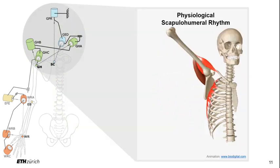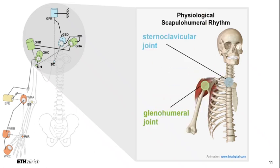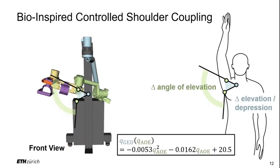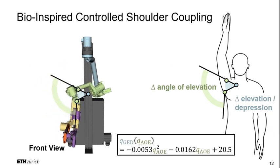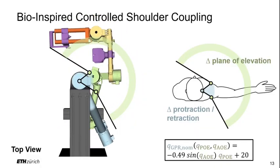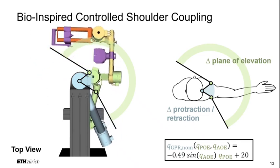The sternoclavicular joint contributes around one-third of the overall range of motion of the shoulder. The robot should support patients in recovering this healthy scapulohumeral rhythm. Therefore, we coupled the elevation and depression movement with the angle of elevation of the upper arm to follow the pattern of unimpaired humans. Similarly, protraction-retraction was coupled to the plane of elevation movement of the upper arm.